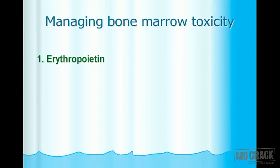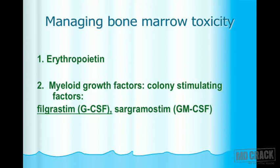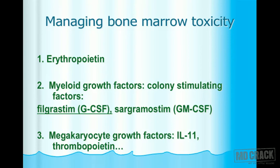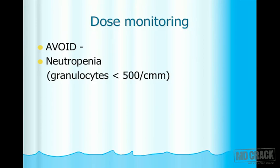To manage bone marrow toxicity: first, erythropoietin may be needed; second, myeloid growth factors in the form of colony-stimulating factors — G-CSF and GM-CSF, that is filgrastim and sargramostim; and third, megakaryocyte growth factor, interleukin-11 or thrombopoietin. For dose monitoring, we must watch the WBC count and avoid neutropenia — granulocytes should not fall below 500 per cubic millimeter.